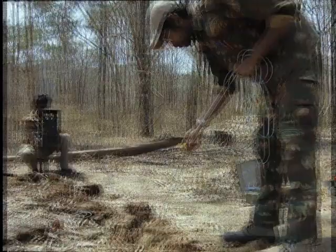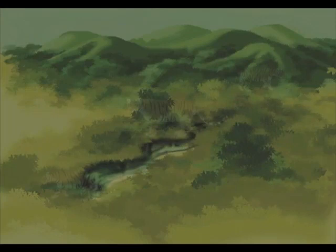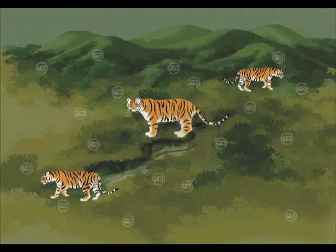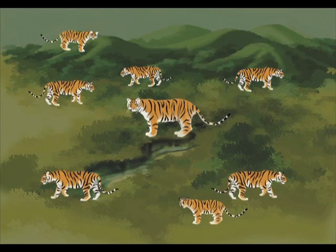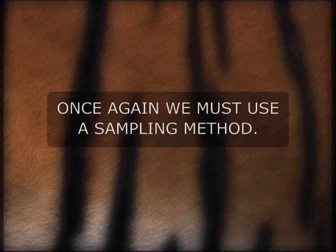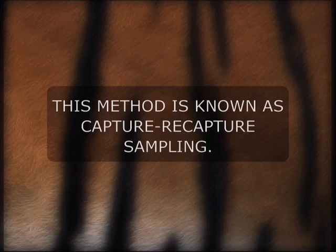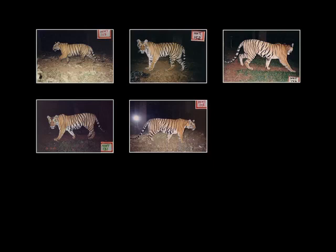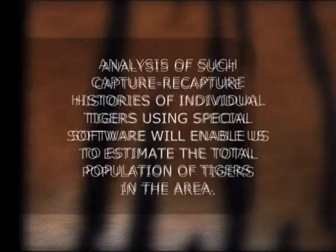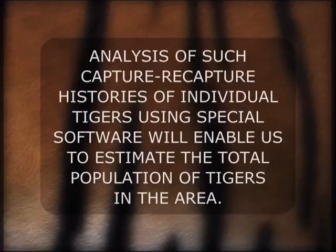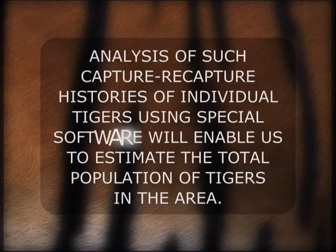Camera trapping tigers using automatic cameras is not difficult. But how do we use these photographs to estimate the total number of tigers in a forest? Once again, we must use a sampling method known as capture-recapture sampling. This involves repeatedly photographing the tigers in an area in a number of samples and finding out what proportion of tigers are recaptured in subsequent samples. Analysis of such capture-recapture histories of individual tigers using special software will enable us to estimate the total population of tigers in the area. To understand this concept better, please refer to Chapter 11 of the manual.